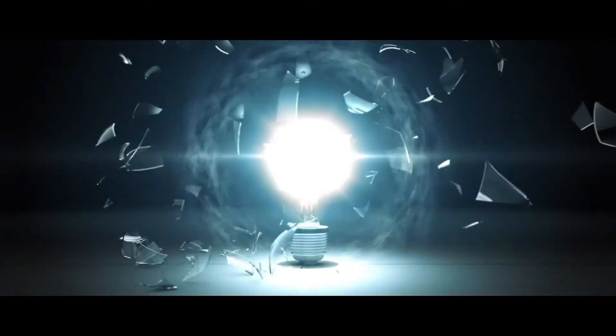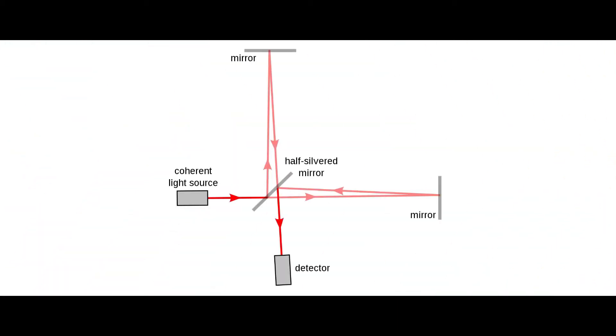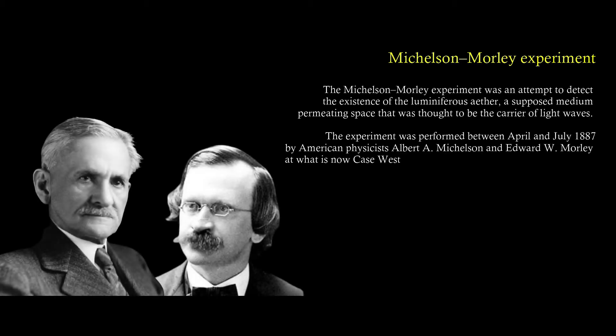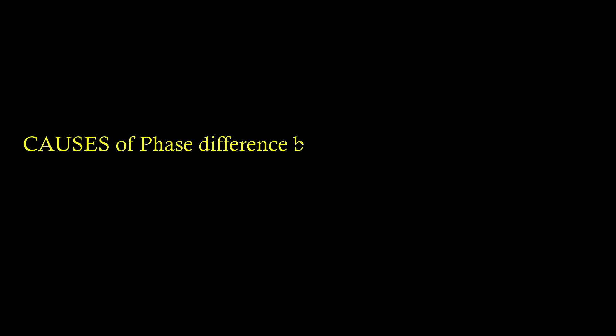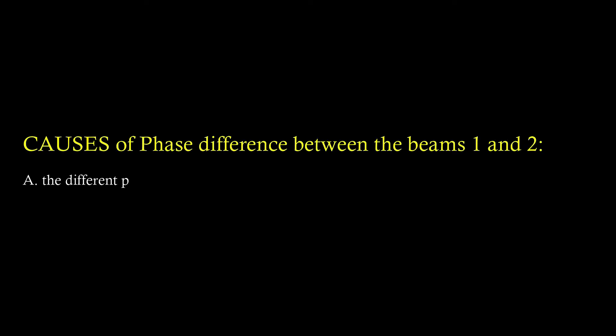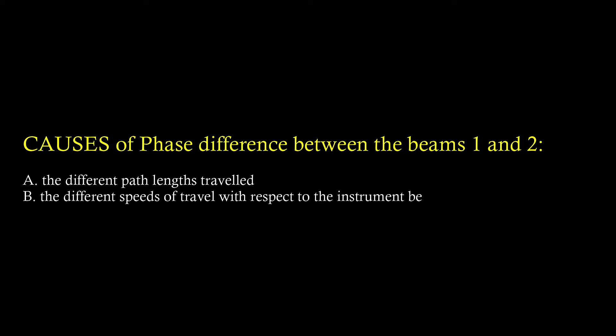But a series of experiments failed to find any evidence for differences in speed due to motion through the ether. Michelson invented the optical interferometer. Michelson first performed the experiment in 1881 to show the existence of ether. In 1887, he performed the experiment in collaboration with E.W. Morley. They computed the phase difference between beams 1 and 2. This difference can arise due to two causes: (a) the different path lengths traveled, and (b) the different speeds of travel with respect to the instrument because of the ether wind.